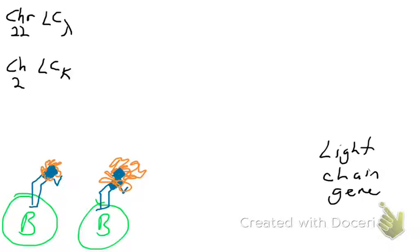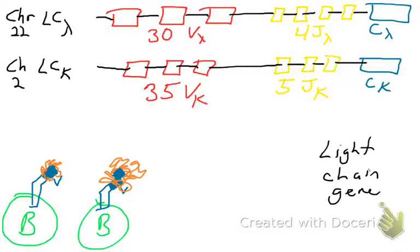Both will give rise to light-chain protein, but only one gets activated. Both the lambda and the kappa light-chain genes contain gene segments, just like the heavy-chain locus. The light-chain lambda locus on chromosome 22 has 30 variable gene segments, four joining gene segments, followed by a constant gene segment.